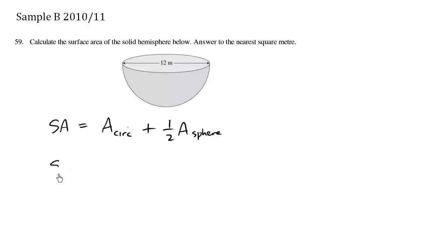The surface area equals the area of the circle, which is pi r squared. Our radius is half of 12 meters, which is 6 meters.